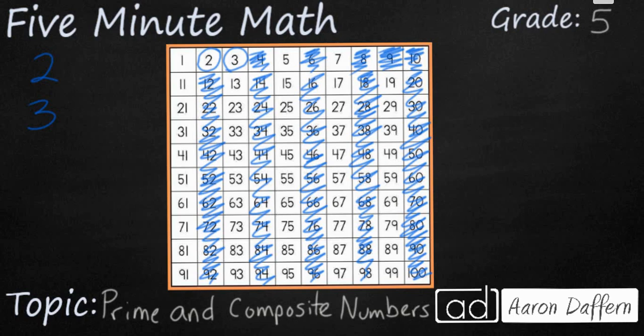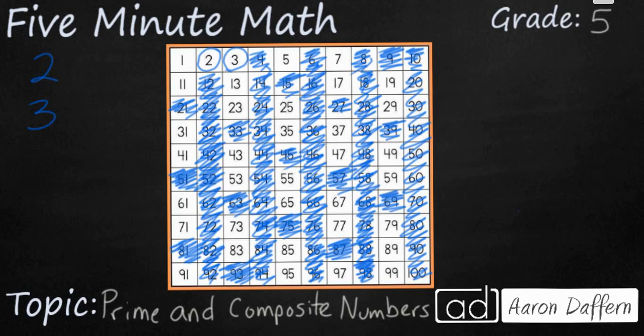Three, six is already taken care of, but we have nine, twelve, fifteen, eighteen. You notice it skips back and forth between even and odd. Twenty-seven, thirty-three, thirty-six, thirty-nine, forty-five, and so on.